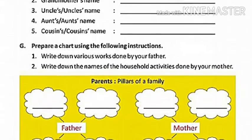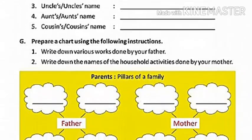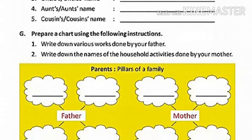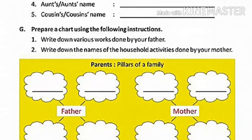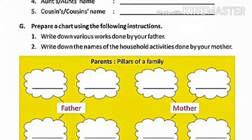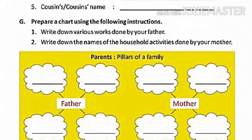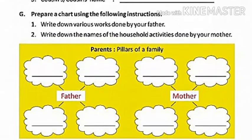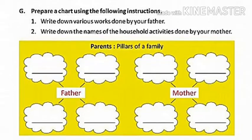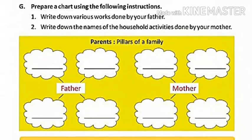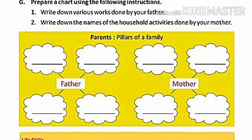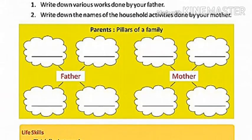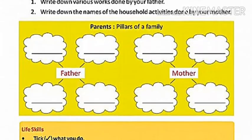Exercise G: prepare a chart using the following instructions. Number one: write down various works done by your father — take help from your parents and write some points. Number two: write down the names of household activities done by your mother. On the clouds or blanks provided, you can write four points for your father and four works done by your mother.